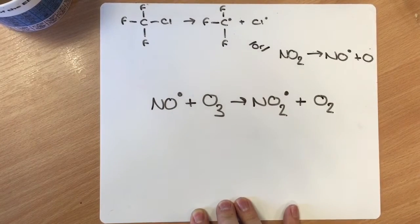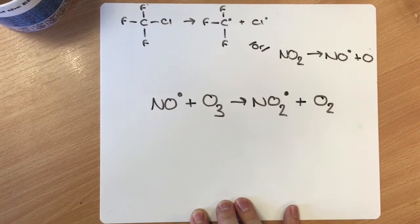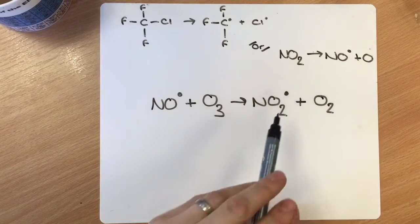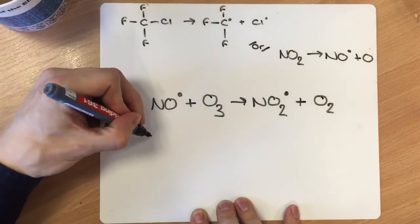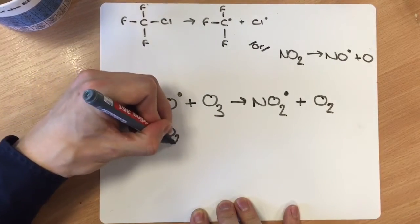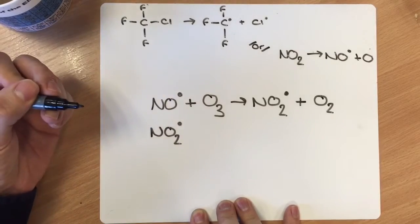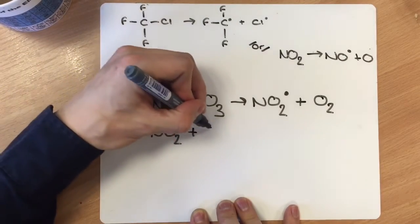Just as before in propagation, when we looked at it in alkanes to make a haloalkane, if we've just formed a radical, we should use it straight away. So we take the NO2 dot just here, and this time we react it with O.